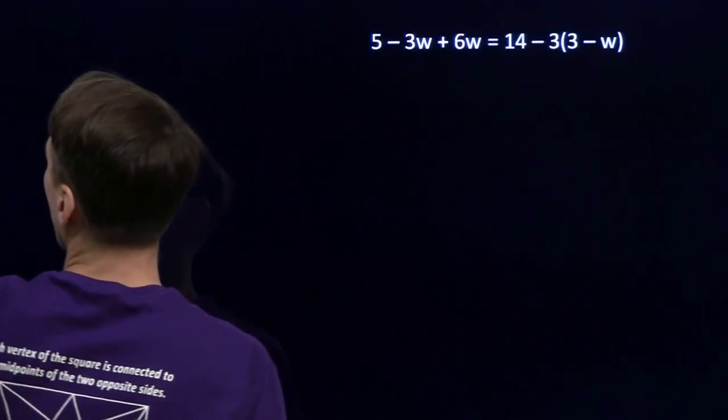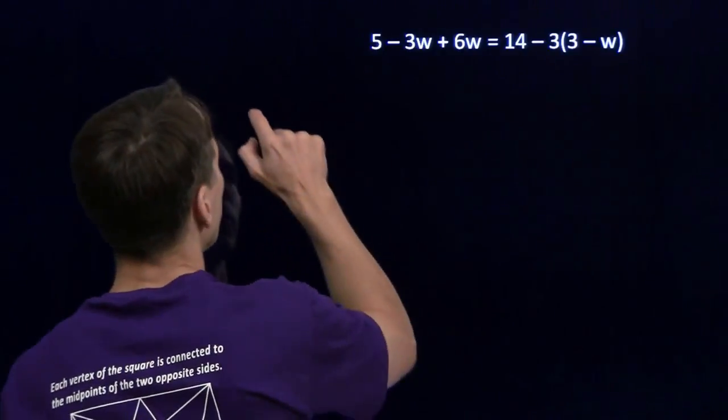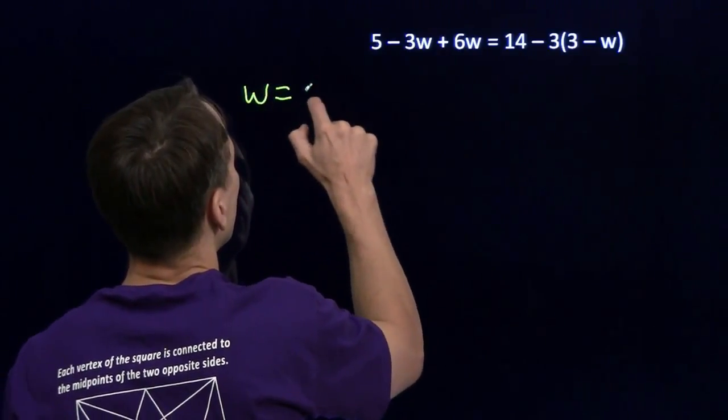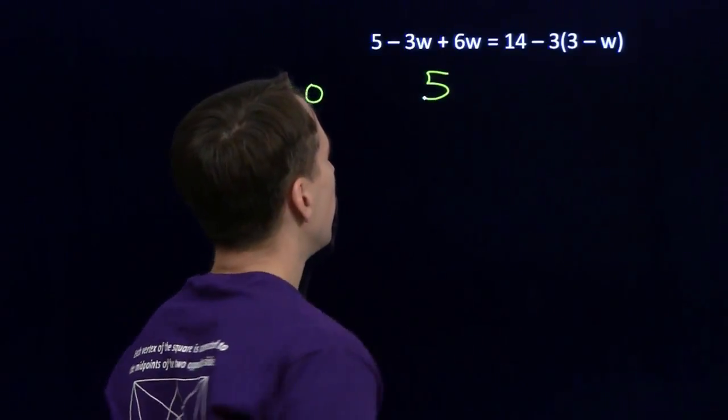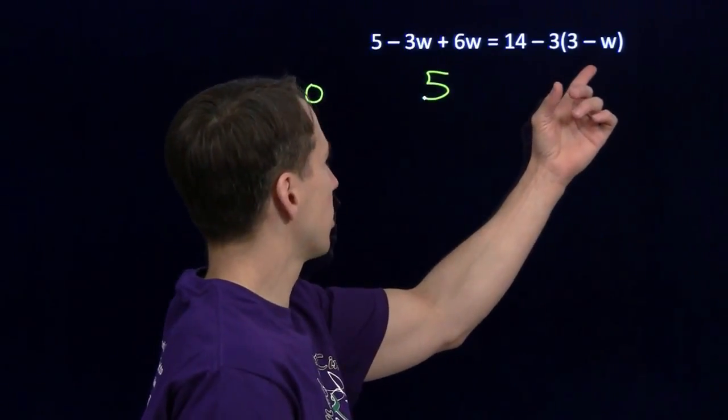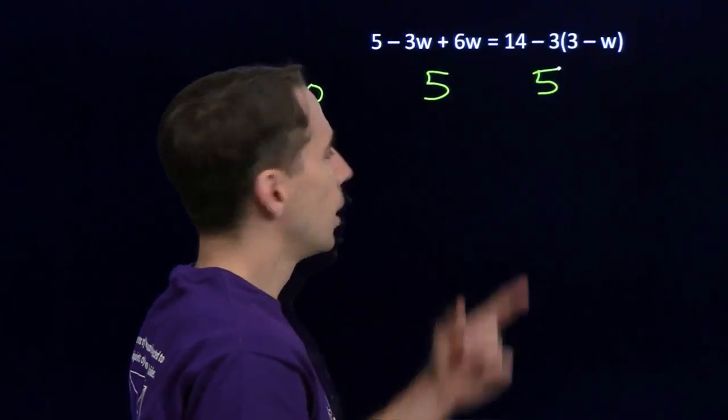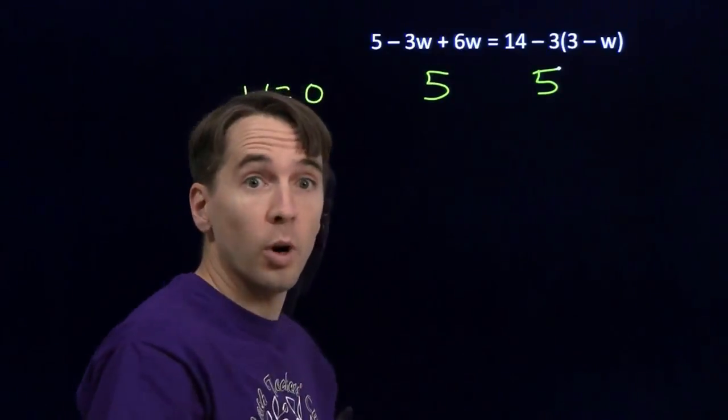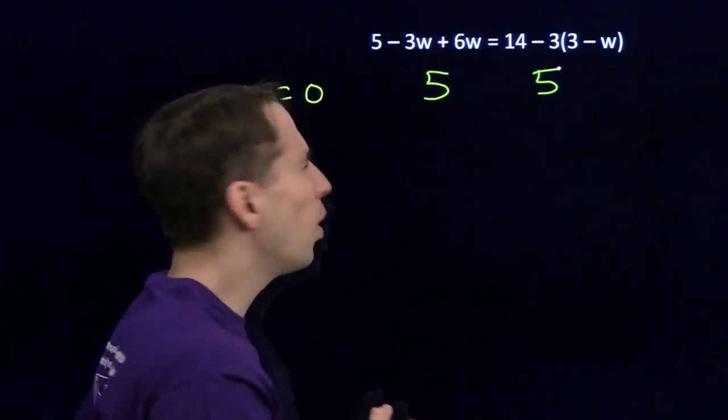We'll try the same thing again. Try sticking in a few different values of w and see what happens. If we put in 0, 5 minus 0 plus 0, that's still 5. Then over here, 3 minus 0 is 3. 3 times 3 is 9. Subtract the 9 from 14, we get 5. Sure enough, they're both equal, so w equals 0 works. That's the solution. But is it the only one?